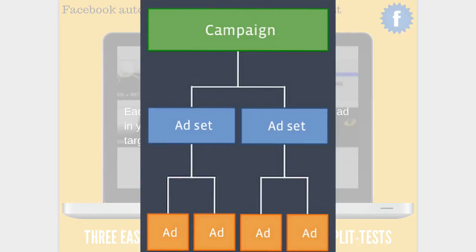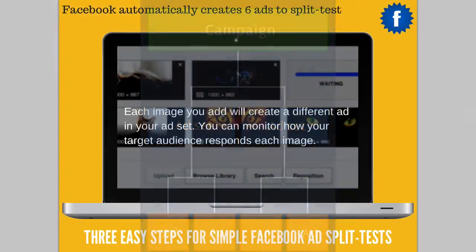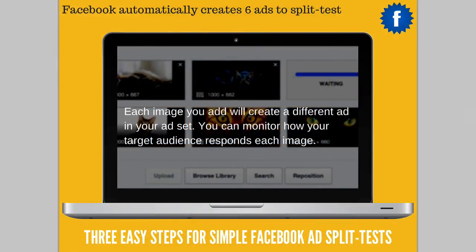Each image you add will actually create a different ad in the ad set. An ad set is basically a folder for your ads. It has to do with how you're targeting — what the audience is. So it might be women in Boston who have these interests; that would be the ad set. Within that, we have our different Facebook ads. By selecting six images, you're automatically going to enter a split test by default — you don't even have to say 'I want a split test.' Facebook automatically does that.